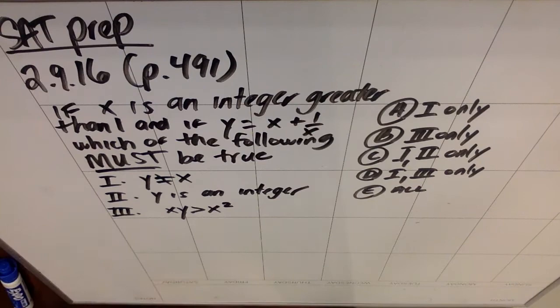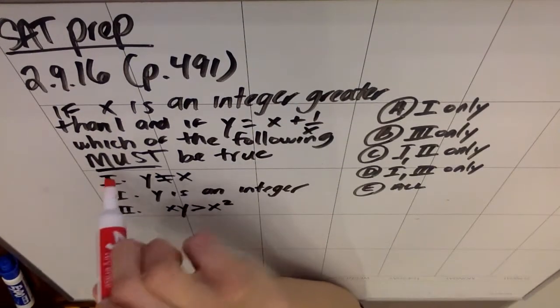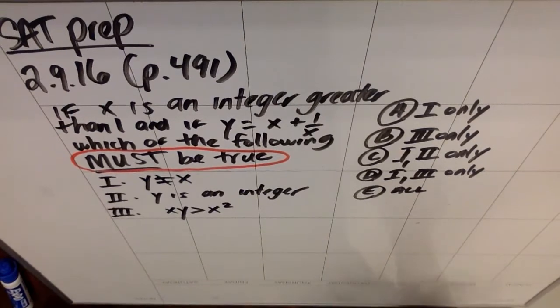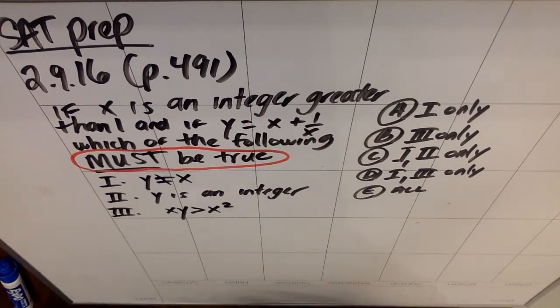The first thing I want to highlight is how I went out of my way to underline must be true. So the easiest thing to do here is if you can find a counter example that disproves one of these, you're done right away. So I say that because it's very easy to disprove too quickly.